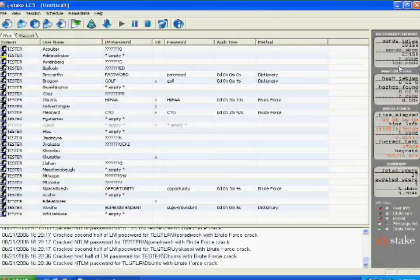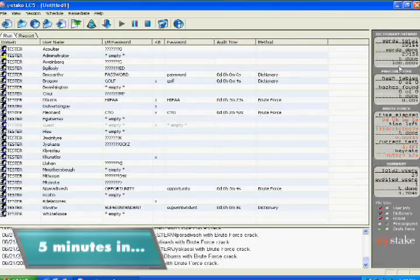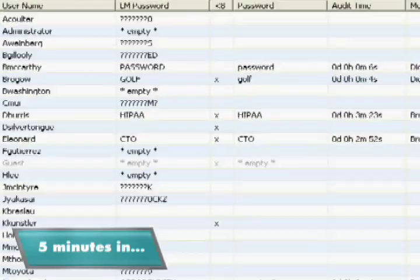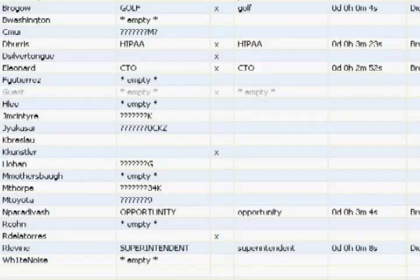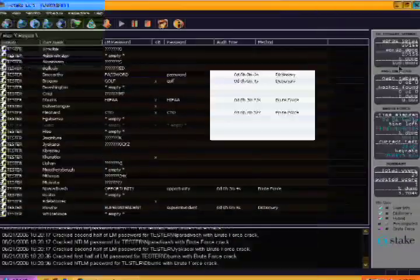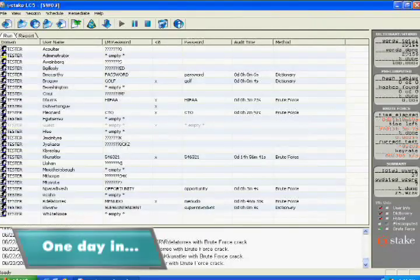Let's jump ahead. Five minutes later, Lofcrack has cracked more passwords. CTO is not in the dictionary, but it's so short it was easy to brute force. Same for HIPAA. Lofcrack's default dictionary is small and contains the word opportune, but not the word opportunity. That's the only reason it took a few minutes to break this word.